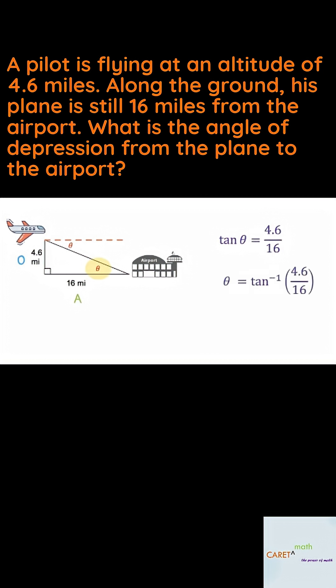Now in order to find my angle, I do have to do the inverse trig function. So I have to do the inverse tangent of that 4.6 over 16, which simplifies to 16.0 and my units are degrees because I'm trying to find an angle.